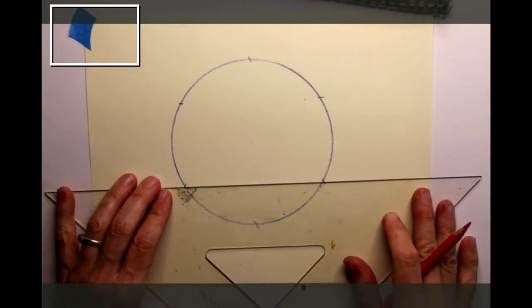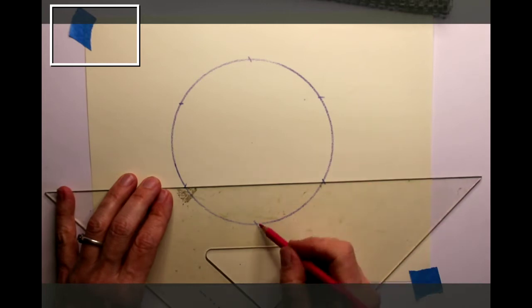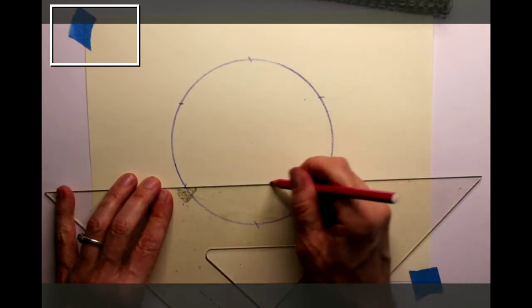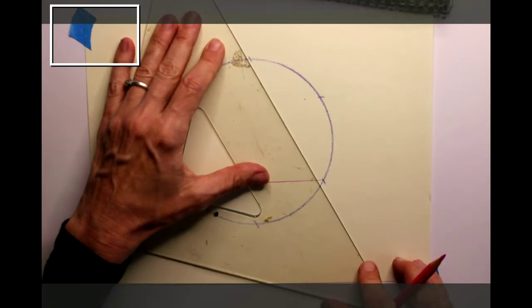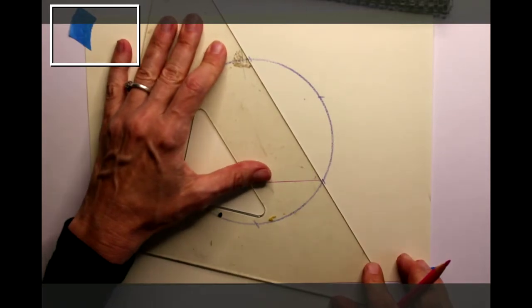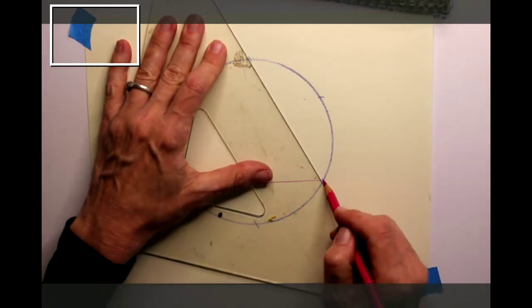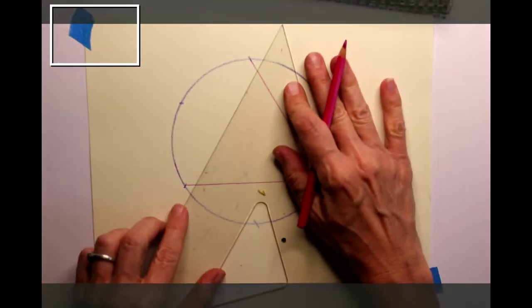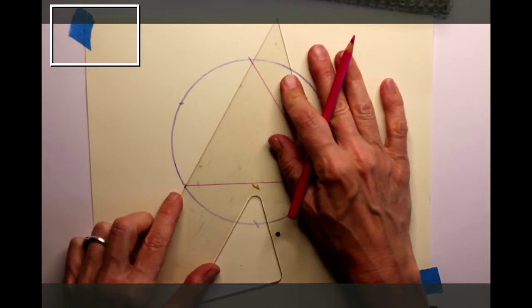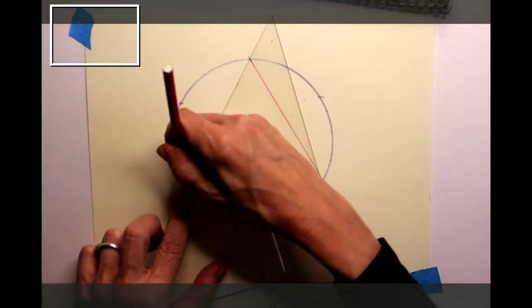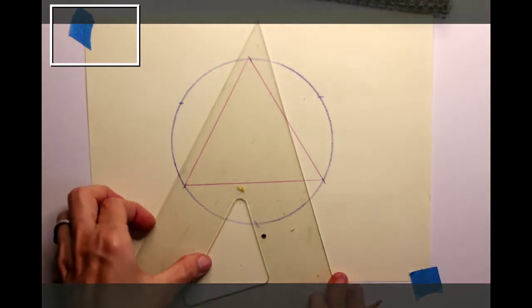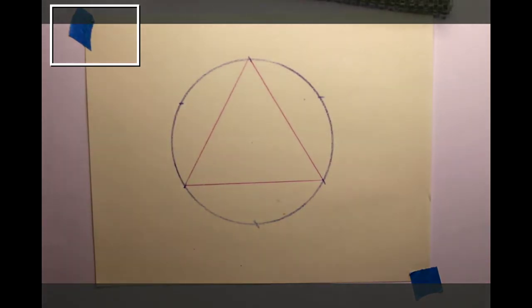I'll connect two of these points, skipping one in between. Notice that I've also divided my circle into three by skipping these other parts.